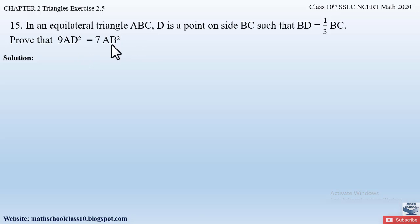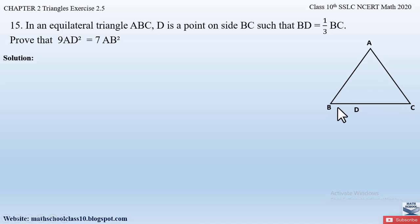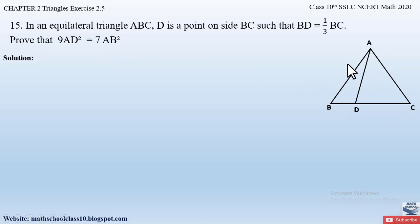Let us first draw the figure for this question. They have given us an equilateral triangle ABC, so let us draw an equilateral triangle and name it as ABC, where D is a point on BC. Mark a point D on side BC such that BD is one third of BC. We have to join vertex A with point D to obtain the AD square value, and prove that 9 AD square is equal to 7 AB square.